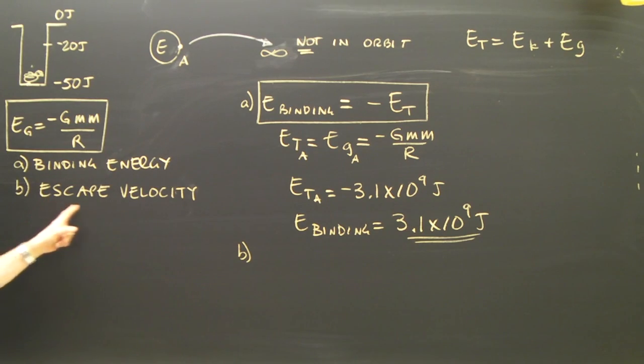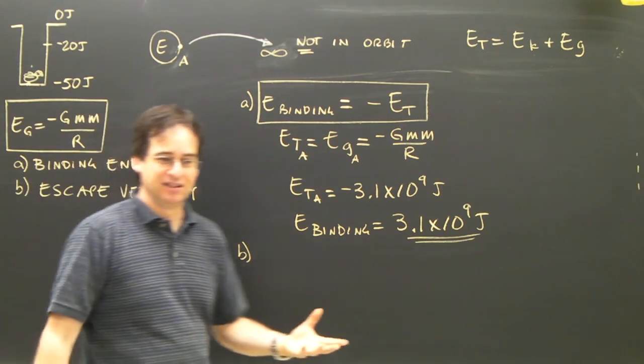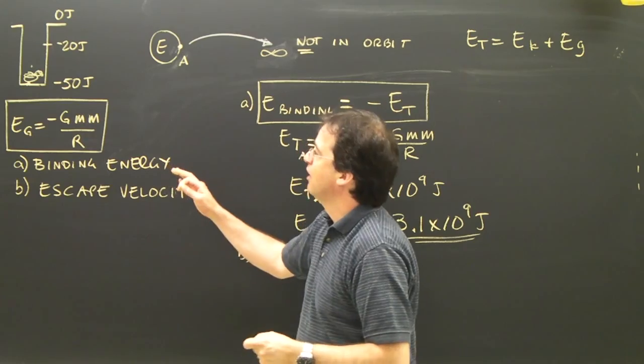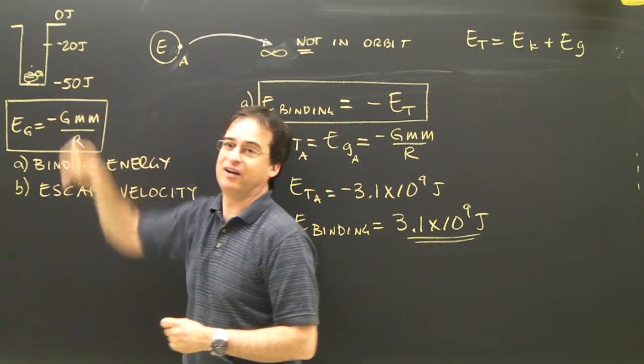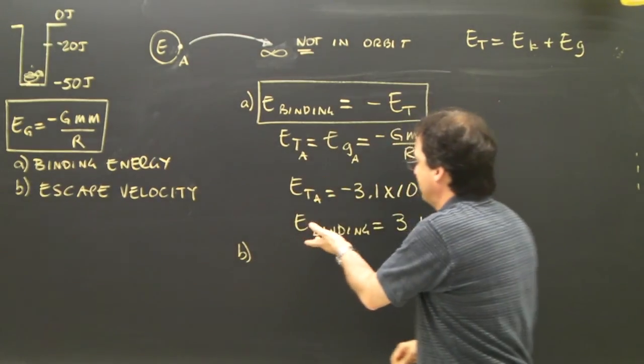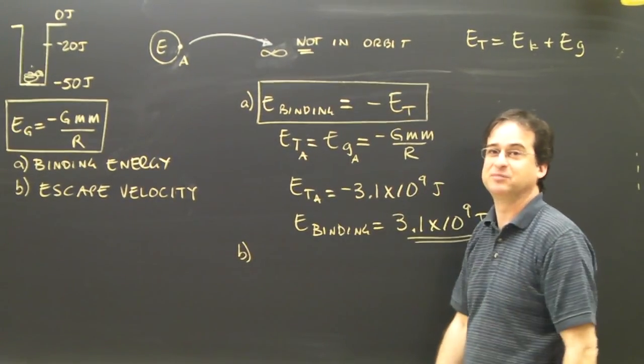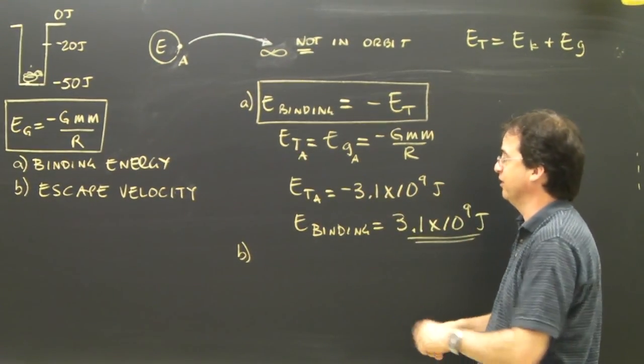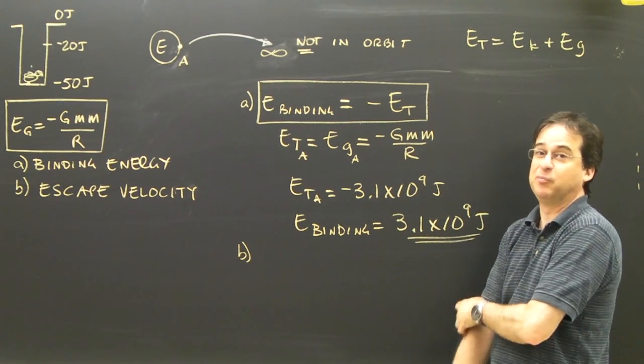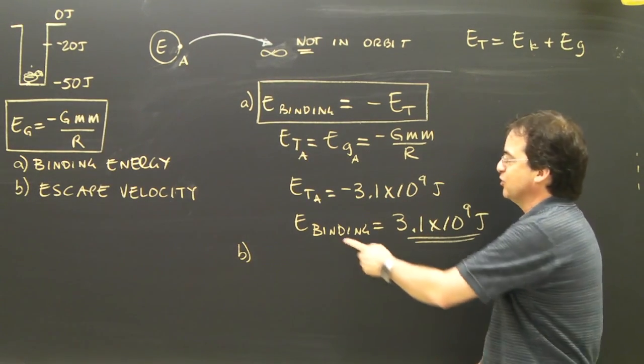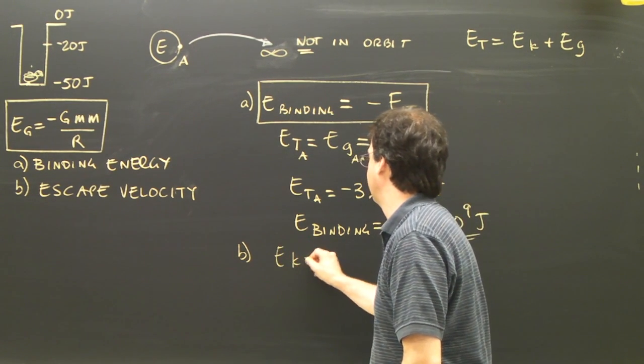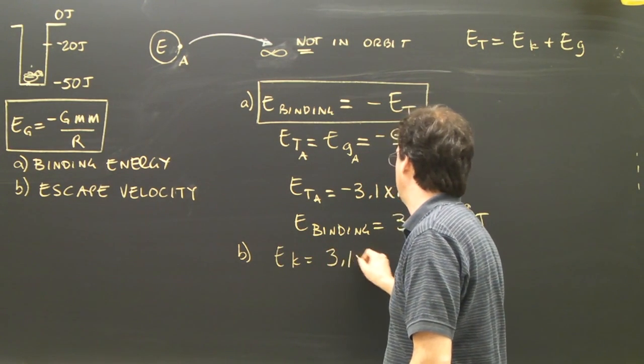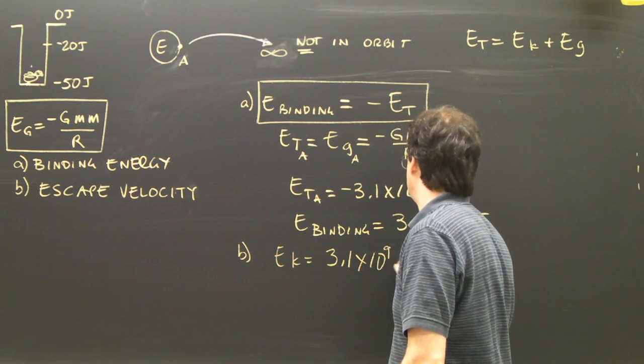B is what's the escape velocity? What that means is, similar to what we did last time, what is the velocity required here to go up to that height? Well, I know I have to give it 3.1 times 10 to the 9 joules to get it to go to that height, because it's in a well with negative 3.1 times 10 to the 9. So the binding energy is the kinetic energy. The kinetic energy required is equal to 3.1 times 10 to the 9 joules.